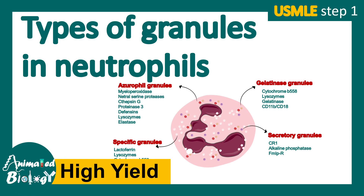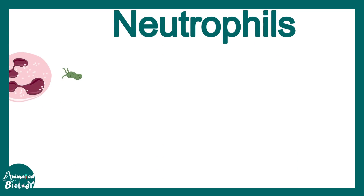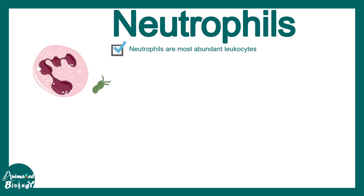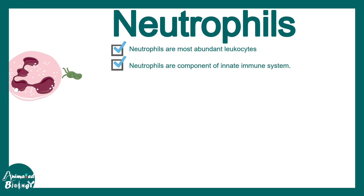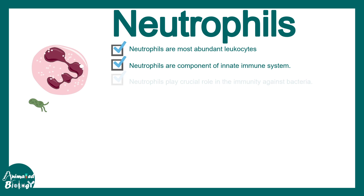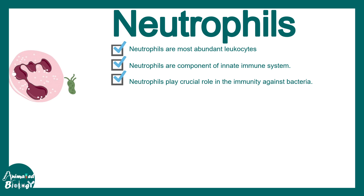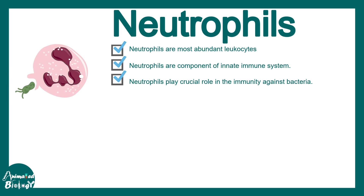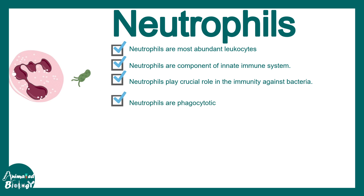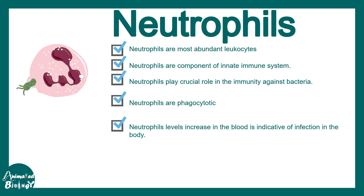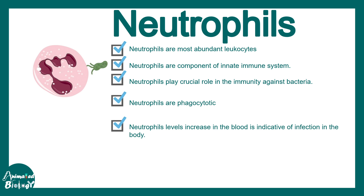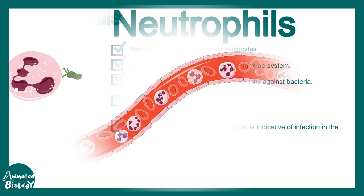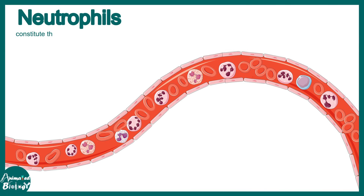In this video we'll be talking about the types of granules in neutrophils. This is a high-yield video for USMLE Step 1. Neutrophils are the most abundant leukocyte in our body and they are a component of the innate immune system. They play a crucial role in immunity against bacteria, and their level increases when you have a bacterial infection.